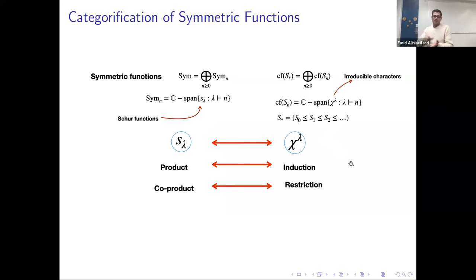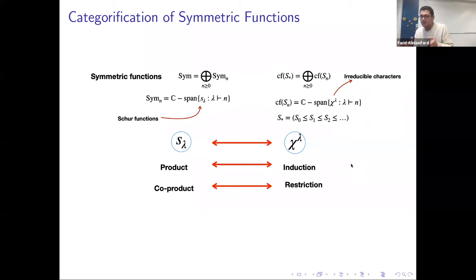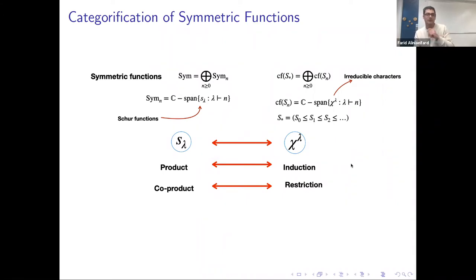If we open a textbook in algebraic combinatorics, we will see symmetric functions at some point. Symmetric functions form a graded vector space with a very nice basis called Schur functions. The elements in degree n have a basis indexed by integer partitions. Schur functions are very interesting. Then with a product and coproduct, symmetric functions form a Hopf algebra.